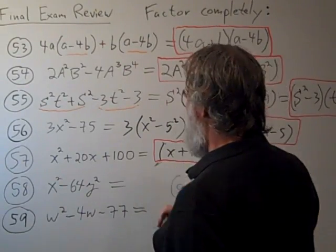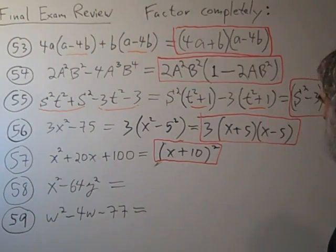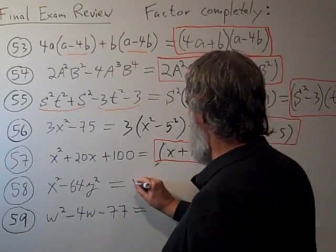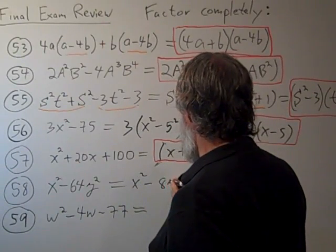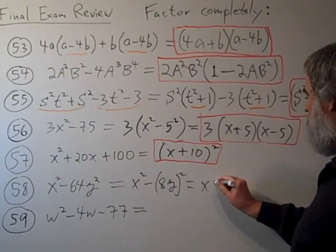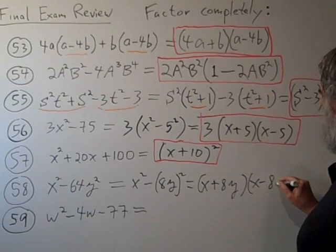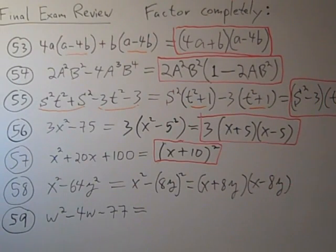Now, for problem number 58, that appears to be the difference of two squares. A squared minus b squared. In fact, you have x squared minus 8y, the quantity squared. So that's x plus 8y times x minus 8y. We had the difference of squares formula up here a moment ago.